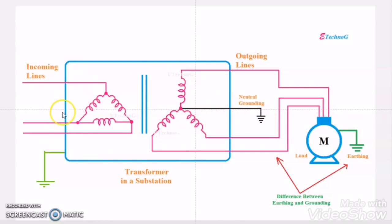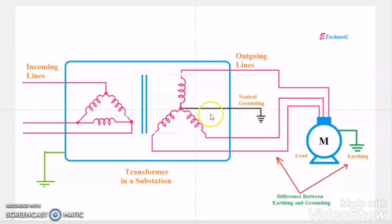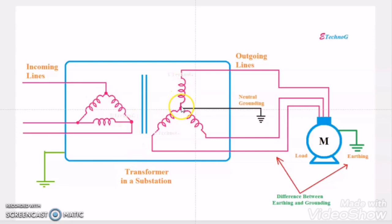Unlike grounding, when we connect the body of the transformer to the earth, then that is called earthing. So when the live part of the electrical equipment is connected to ground or zero potential, it is called grounding. When the dead part of the same electrical equipment is connected to the earth or zero potential, it is called earthing. Earthing can be done anywhere in the electrical installation, but grounding is allowed only at the source side.